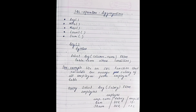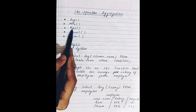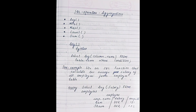Hello everyone, welcome back to Placement Prep. Today we are going to discuss MySQL aggregation operators. There are total five aggregation functions: the average function, minimum function, maximum function, count function, and sum function.